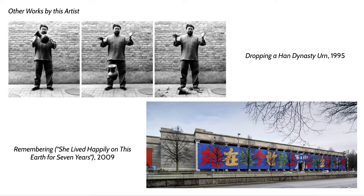A lot of Ai Weiwei's work has to do with critiquing the Chinese government as well as their handling of elements of their past. The piece called Dropping a Han Dynasty Urn actually involved him taking a Han dynasty urn and destroying it. There's an iconoclastic element to this piece, critiquing the destruction that happened during the Cultural Revolution when China was trying to forget elements of its past and move into a more contemporary future divorced from its history.